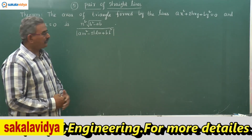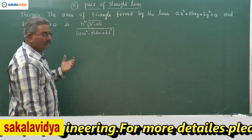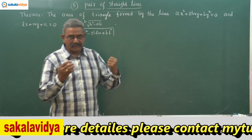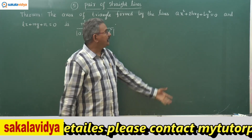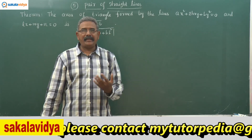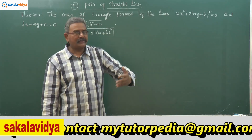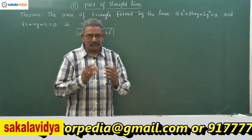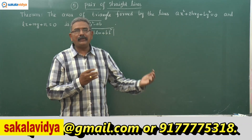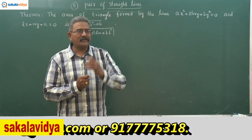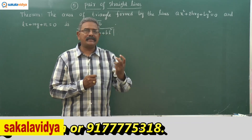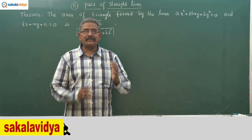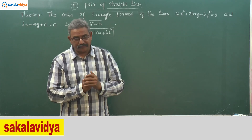Let us prove this theorem now. First, consider the separate equations of ax² + 2hxy + by² = 0 as two lines: l₁x + m₁y = 0 (equation 1) and l₂x + m₂y = 0 (equation 2). Obviously these two lines pass through the origin, so the point of intersection of these two lines is the origin (0, 0).